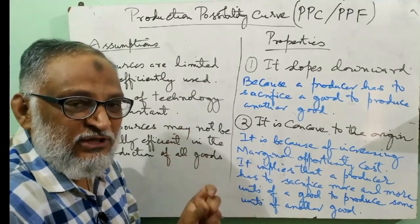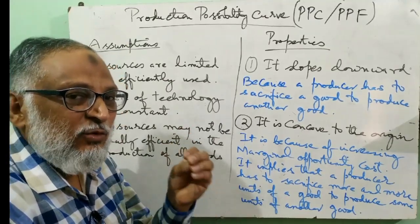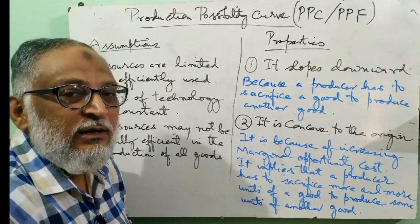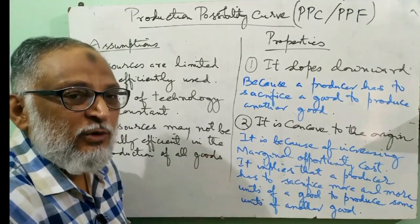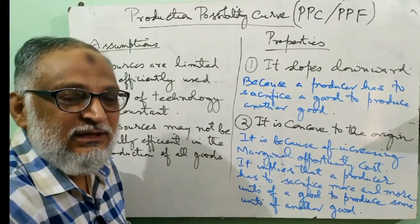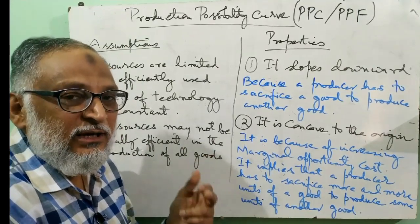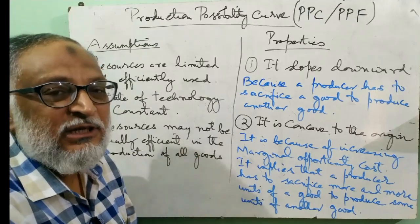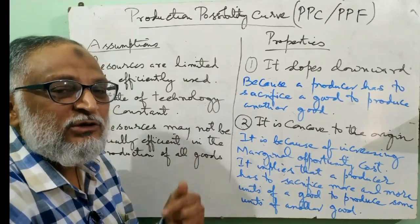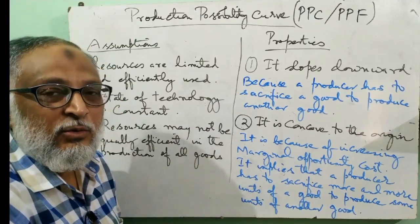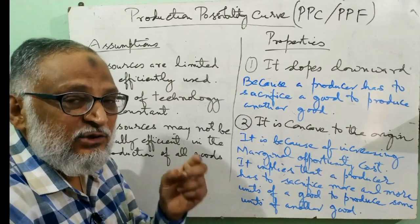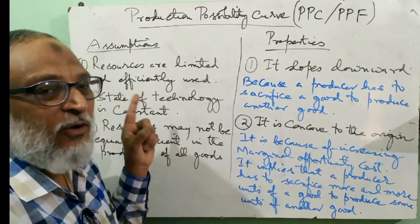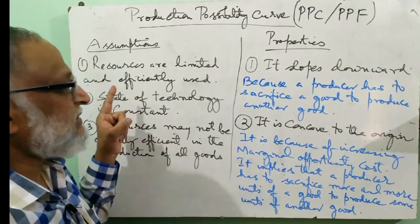So what is the definition of PPC? This is the graph that shows how we can make two products together, and if we want to increase the production of one, then we will have to reduce the production of the other. Why do we do this? Because it is based on the following assumptions.